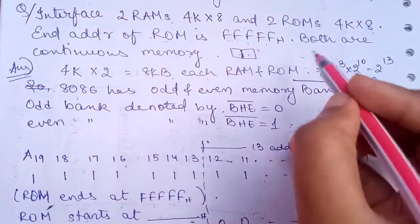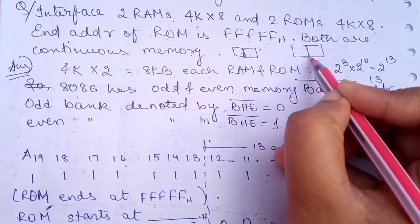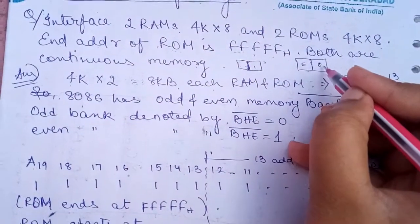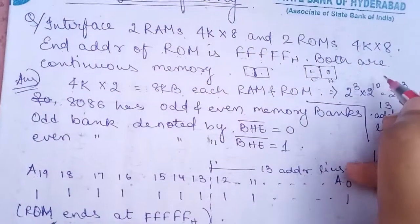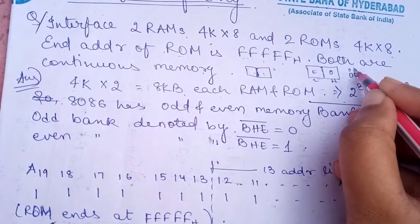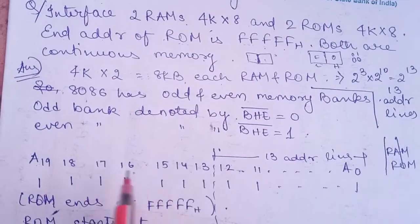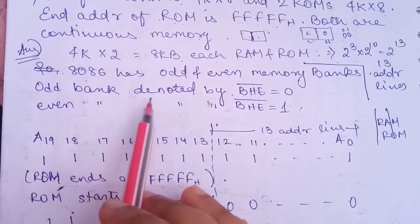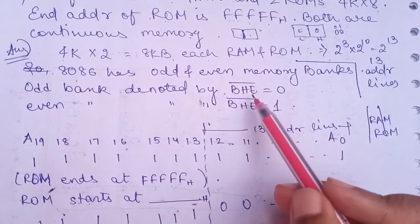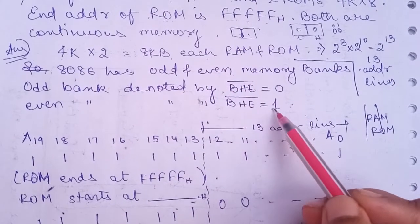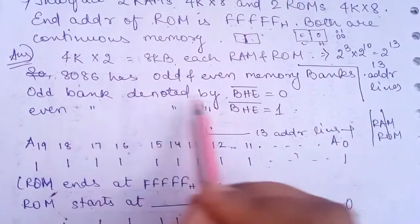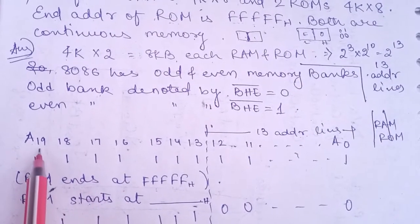The total RAM is divided into two parts: one acts as the odd bank and the other as the even bank. The even bank is the lower bank and the odd bank is the higher bank. For example, address 00 is even (lower) and 01 is odd (higher). Odd banks are denoted by BHE bar equals zero. BHE bar is the bus high enable — if it is 1 it denotes the even bank, and if it is 0 it denotes the odd bank.